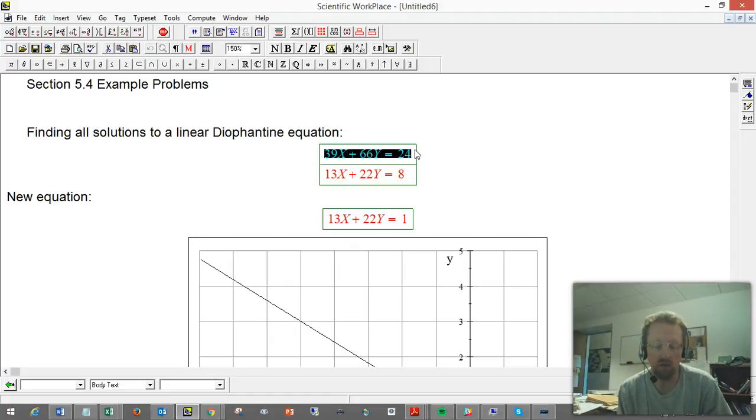Now, if you just write down an equation like that, it might not have any solutions. We know that when it won't have solutions is when the GCD of the coefficients on the left-hand side, the 39 and 66, if that didn't divide 24, then we wouldn't get any solutions. But in fact, it's not too hard to see the GCD on the left-hand side is 3.